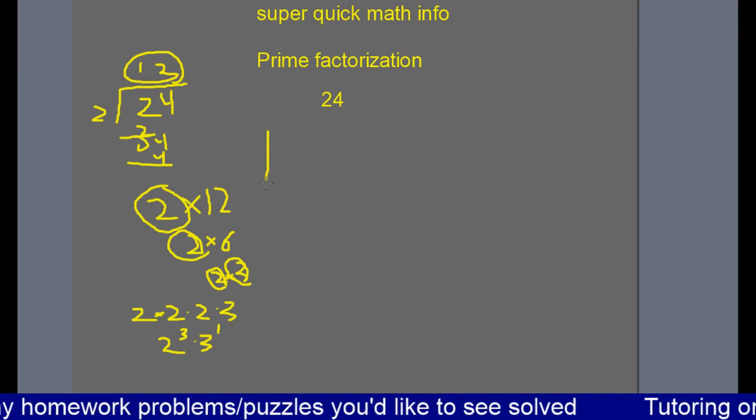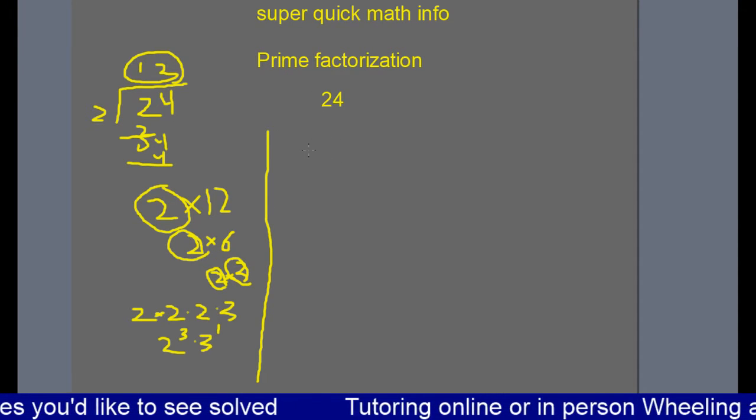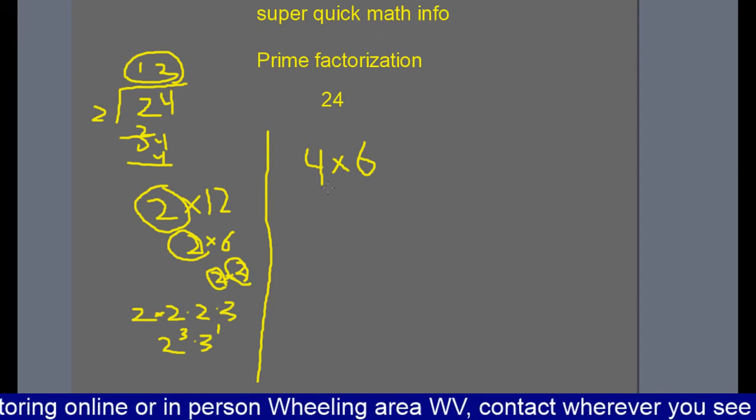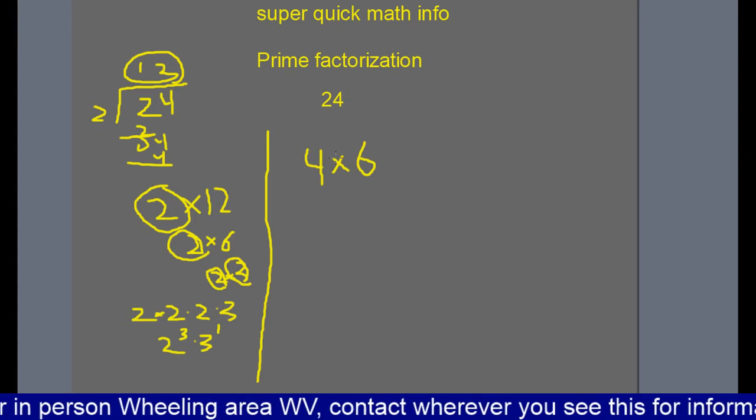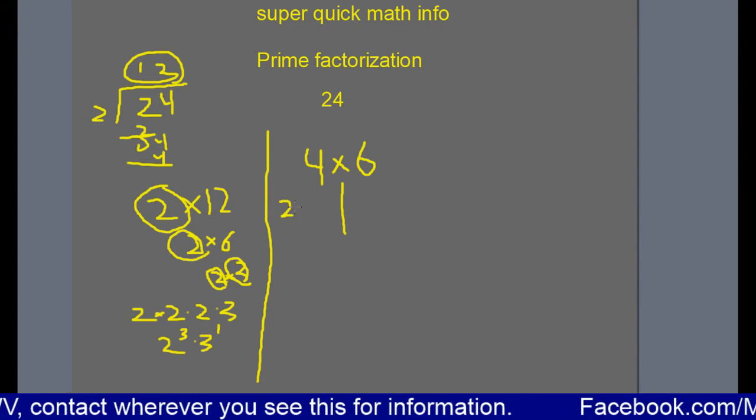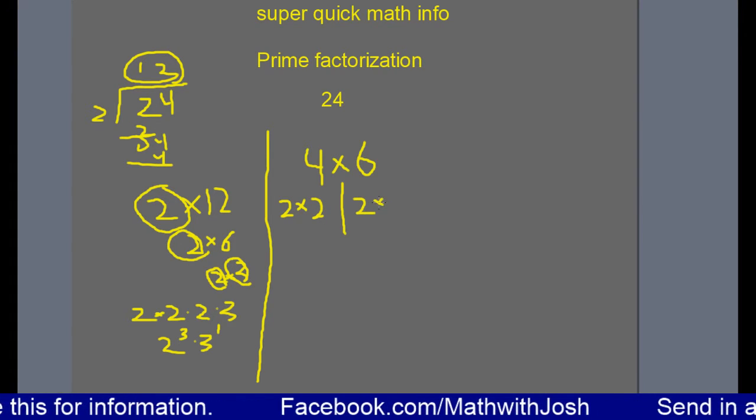If you went to prime factor 24, you might have first realized, oh, that's 4 times 6, I remember from my times tables. And then you see neither of these two factors are prime, so we have to break them both down. 4 we realize is 2 times 2. 6 we realize is 2 times 3.